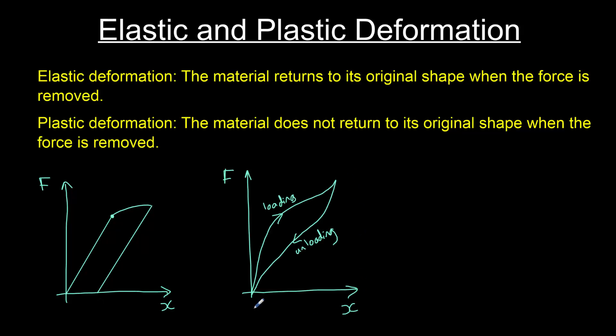Here is the force extension graph for a polymeric material such as rubber. You can see that it does not obey Hooke's law. There is nowhere on this graph where we have a straight line proportional relationship between force and extension.